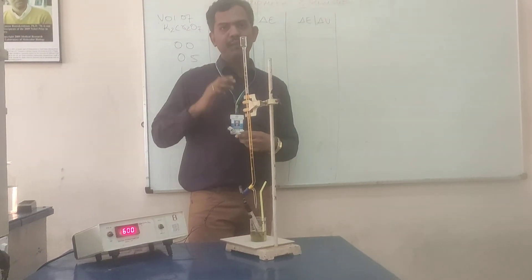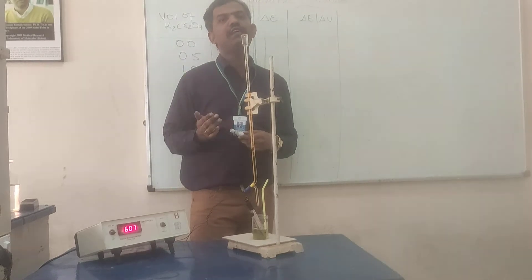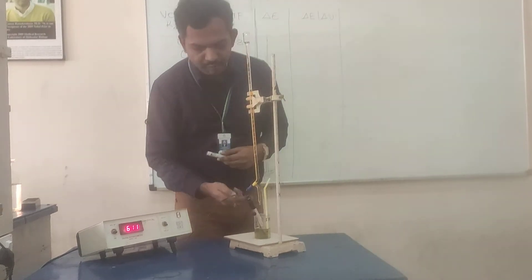So, the color changes here from bluish to greenish. You are supposed to get a sudden jumping potential. Why does a sudden jumping potential? I have discussed in theory.